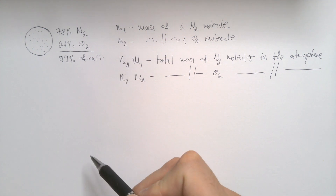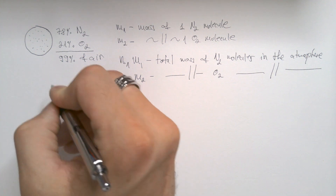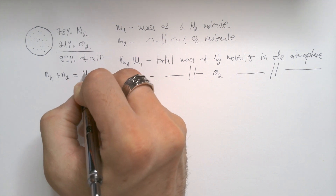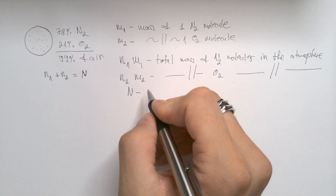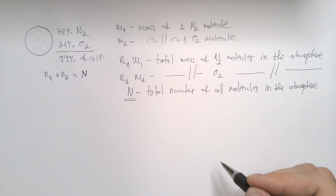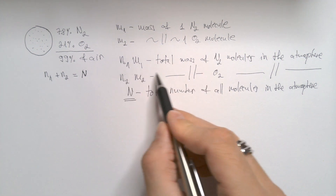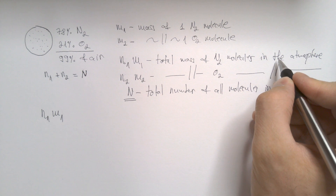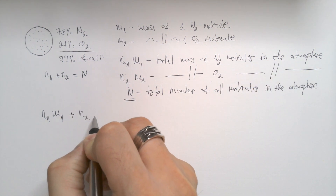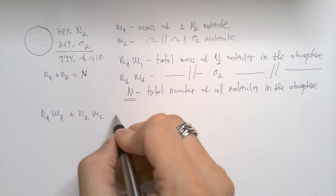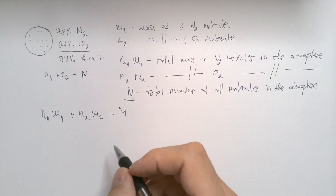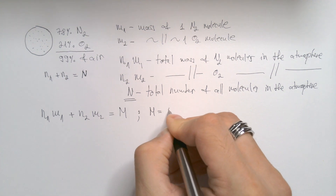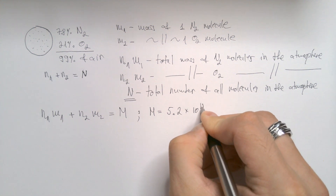The issue is I do not know N1 and N2. But what I do know is that N1 plus N2 equals capital N, and that is the total number of all molecules in the atmosphere — and clearly N is what we are after. From these definitions, N1·M1 plus N2·M2 equals capital M, the total mass of the atmosphere. In my previous video, we calculated that the total mass of the atmosphere is 5.2 times 10 to the power of 18 kilograms.